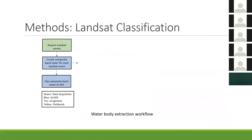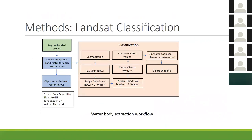The classification workflow: pre-processing in ArcGIS, followed by classification steps in eCognition — segmenting the image into objects, calculating NDWI values, and assigning objects with NDWI greater than zero as water. Neighboring objects that share a reasonable border can also be included in the water class. Objects are then merged into one seamless image, and I'll separate seasonal water bodies from permanent ones by comparing NDWI values year-to-year, with the final product being a polygon shapefile importable into ArcGIS.